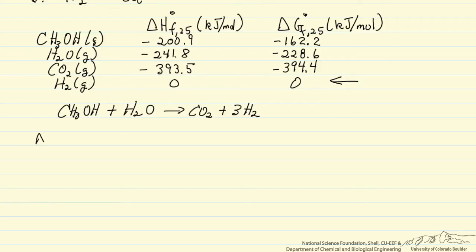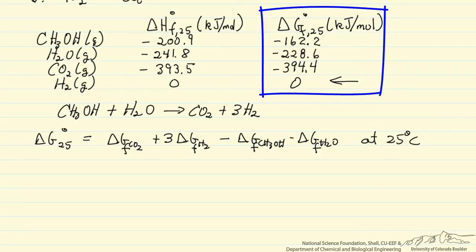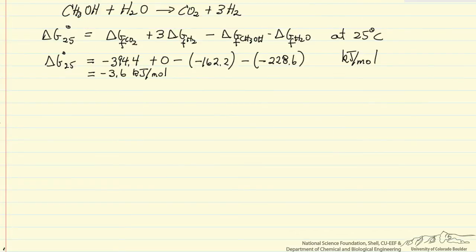The first step is to calculate delta G of the reaction at 25 from delta G of CO₂, plus 3 times delta G of hydrogen, minus delta G of methanol, minus delta G of water — all at 25 degrees C. The stoichiometric coefficients are used, negative for reactants and positive for products. Substituting in the values from the table gives delta G of reaction equal to minus 3.6 kJ per mole.